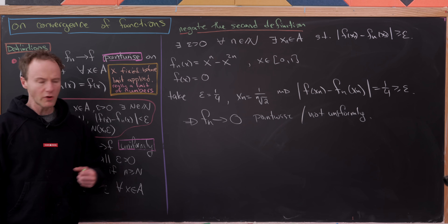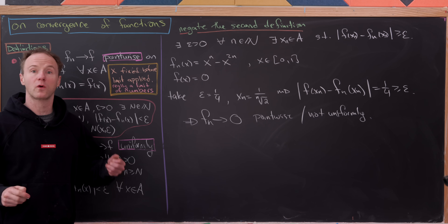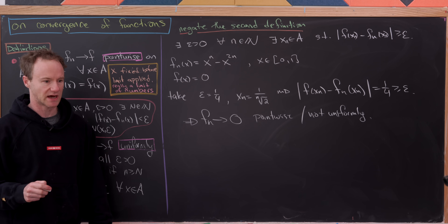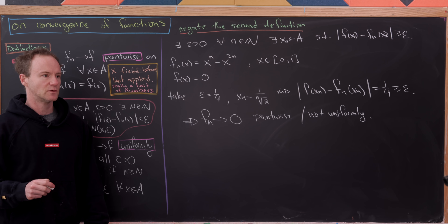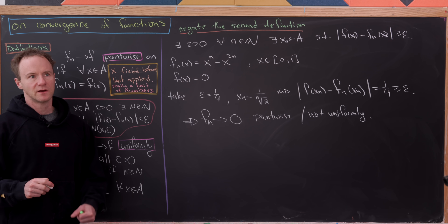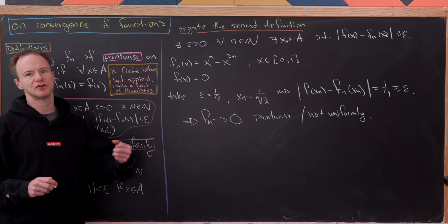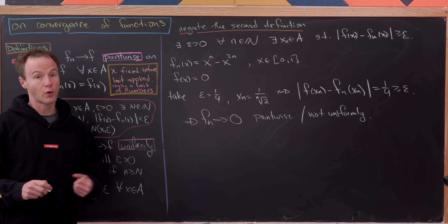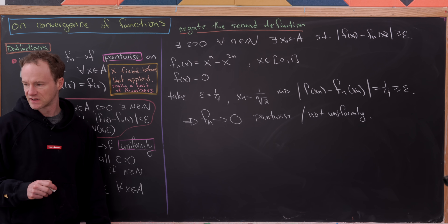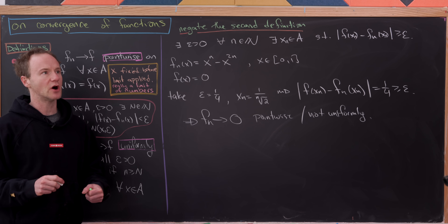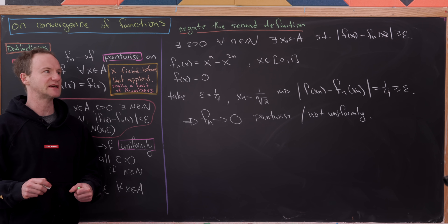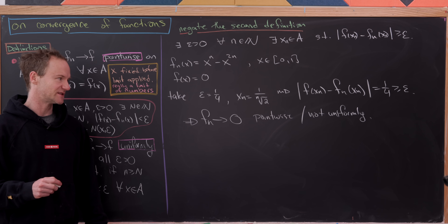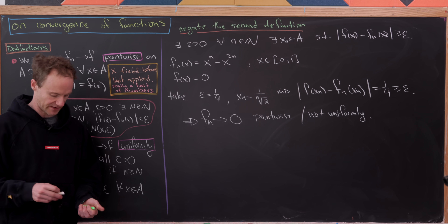This is an important type of counterexample to keep in mind: something that satisfies a certain definition but not a stronger version of it — in this case, point-wise convergence but not uniform convergence. It's always important to know these counterexamples because they remind you why there are two definitions and not just one.